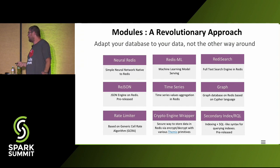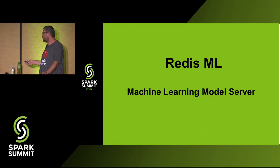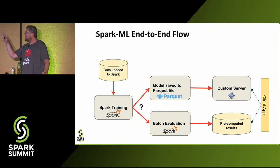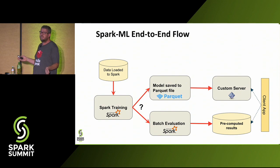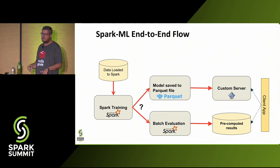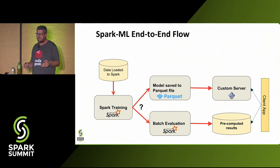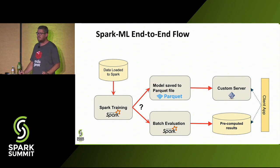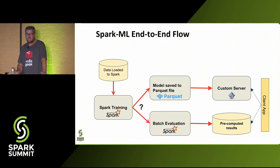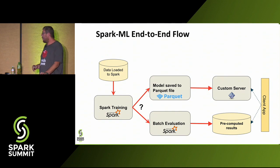Today I'm going to be talking about the Redis ML module, which is a machine learning model server. Let's look at the usual Spark machine learning end-to-end flow. You load your data to Spark, transform it, perform the training, and then to actually serve the results there are two ways. One way is going batch — pre-calculating all results for all possible values and storing them in a data store. Redis would be a very good data store for this kind of operation.